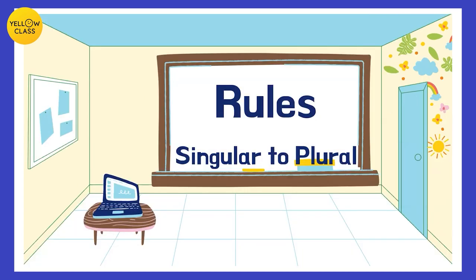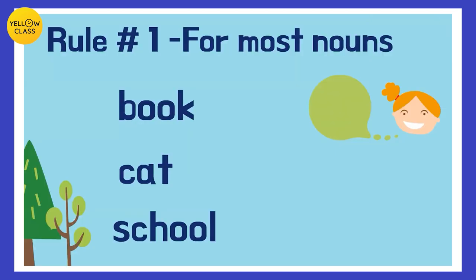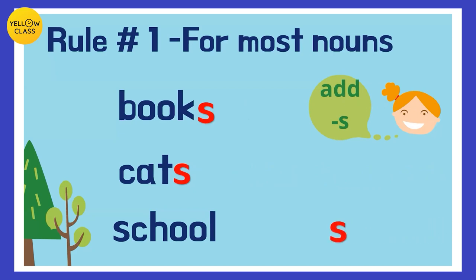Now let's look at the rules of converting singular to plural. Rule one is the most basic rule for most nouns, such as book, cat, school — words ending with regular consonants. We add 's'. So book becomes books, many cats and many schools.